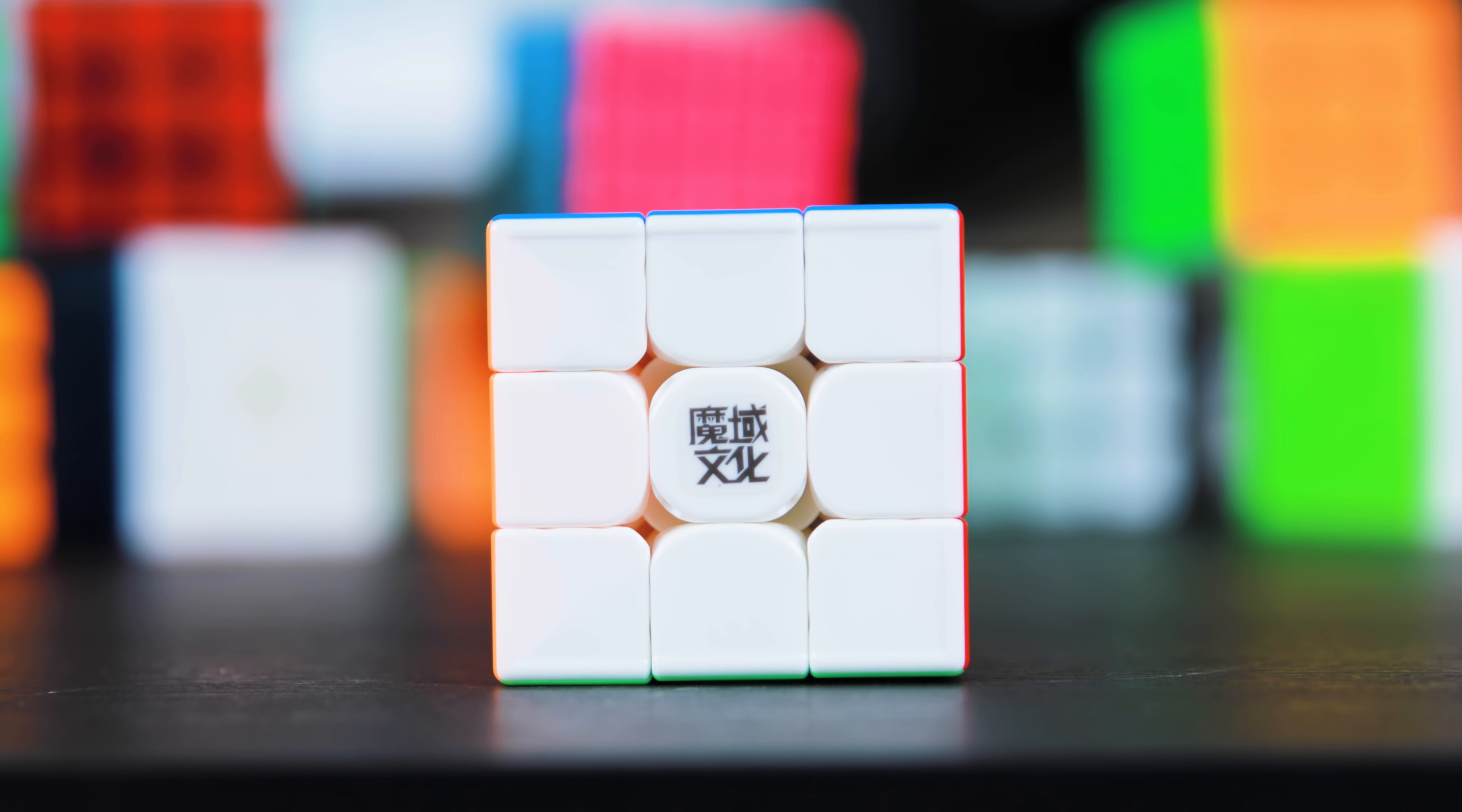The GTS3 is a 56mm 3x3 and weighs in at 92 grams, which makes it slightly bigger and heavier than most 3x3s currently on the market. It can be purchased for $34.99 and only comes in a stickerless model. The magnetic version comes with pretty strong magnets. There's also a non-magnetic version which is available for $29.99.